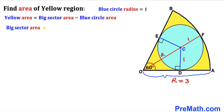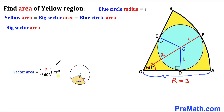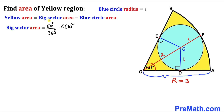Now let's calculate the area of the big sector using the formula: area = (θ/360°) × π R². With R = 3 and θ = 60 degrees, we get (60/360) × π × 3² = (1/6) × 9π = 9π/6 = 3π/2.